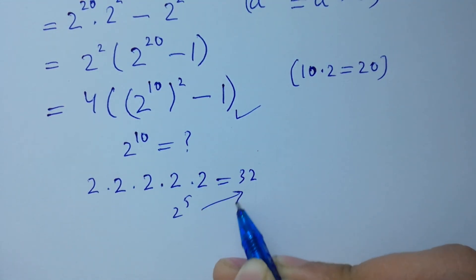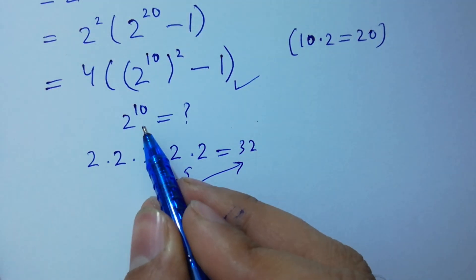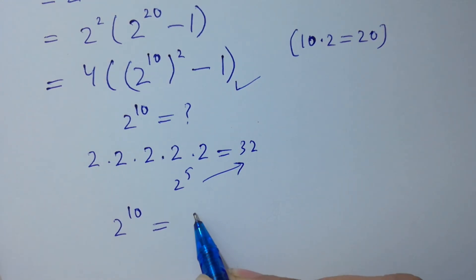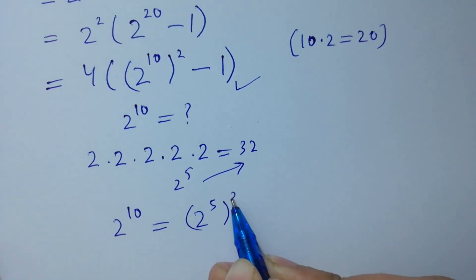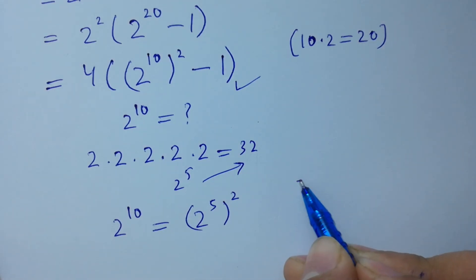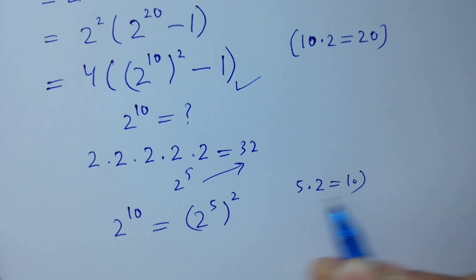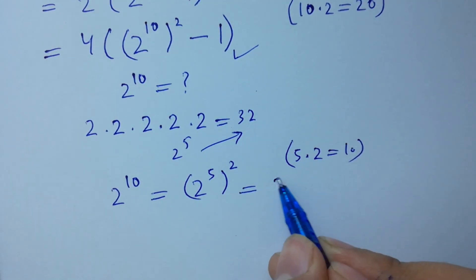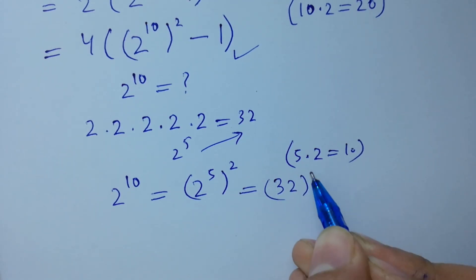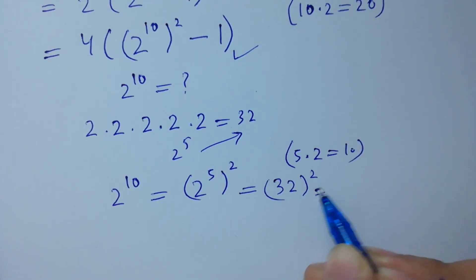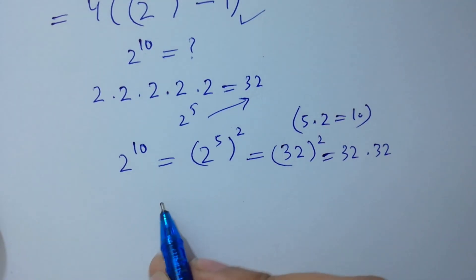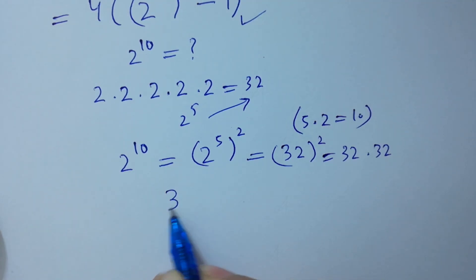So 2 to the power 10 is the same as (2 to the power 5) to the whole power 2, since 5 times 2 equals 10. Substituting 2 to the power 5 as 32, we get 32 to the power 2, which is 32 times 32.